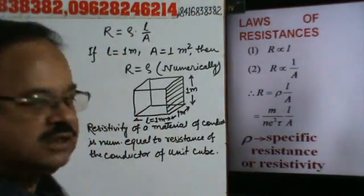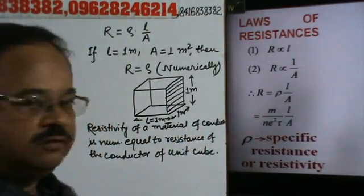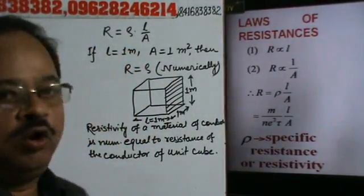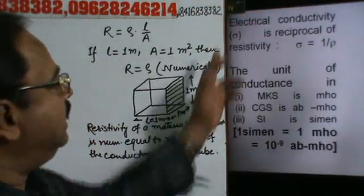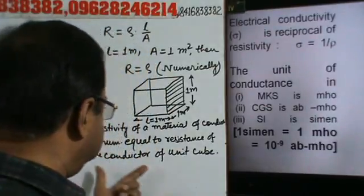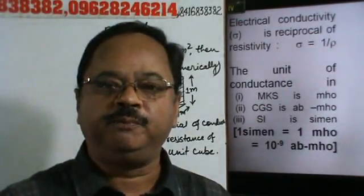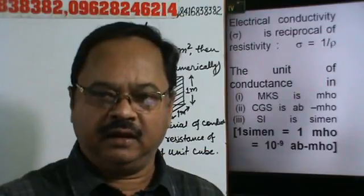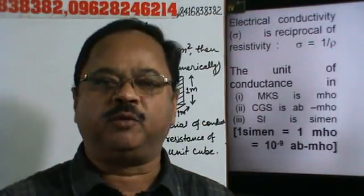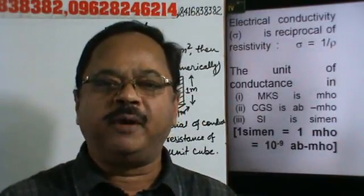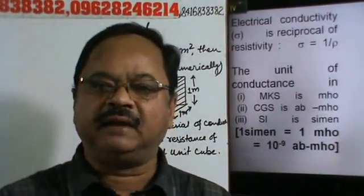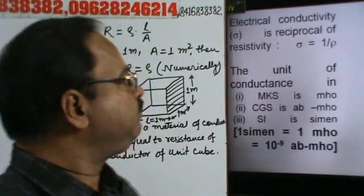This is called the law of resistances. Resistivity is denoted by rho and is a characteristic of the material. For example, for copper, no matter what size or shape it is in, its resistivity remains the same. Resistivity differs from material to material.